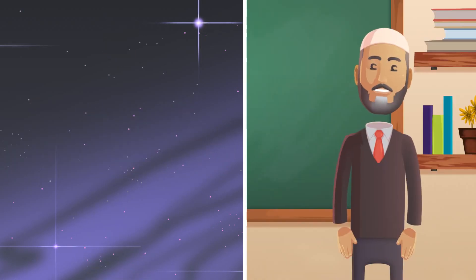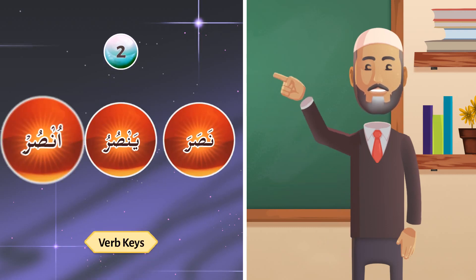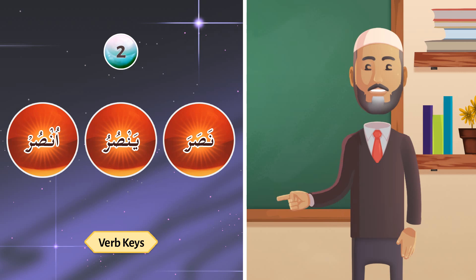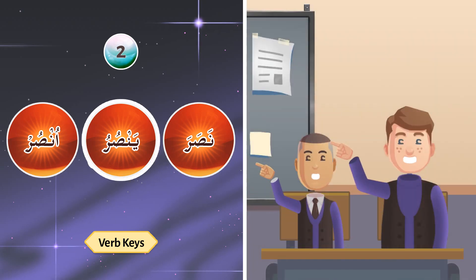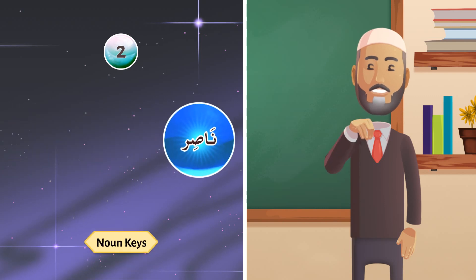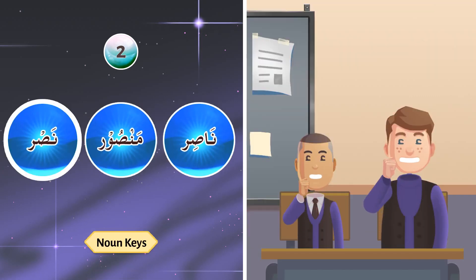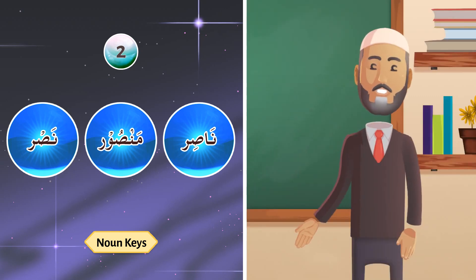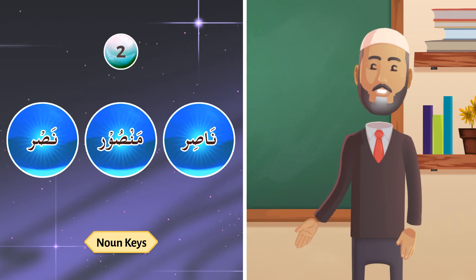Let's take the second style, which is: nasara yansuru unsur. Repeat after me: nasara yansuru unsur — nasara yansuru unsur. Naasir, mansoor. As you know, in the second style naasir and mansoor will not change — fa'il and maf'ool remain the same. The change is only in the first three verb keys, on the pattern of nasara yansuru.